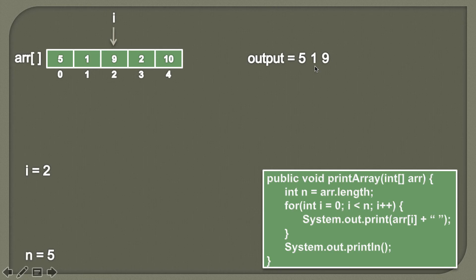Moving ahead, we'll again increment the value of i by one, so i will become three. And it will point to the third index. We'll print the value at the third index, which is two.